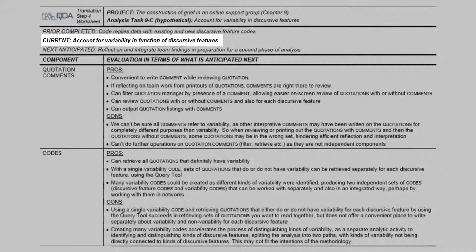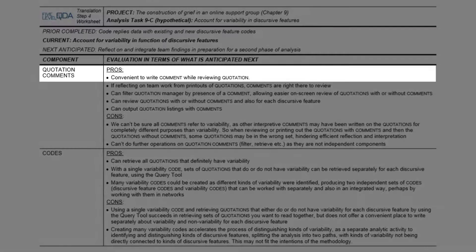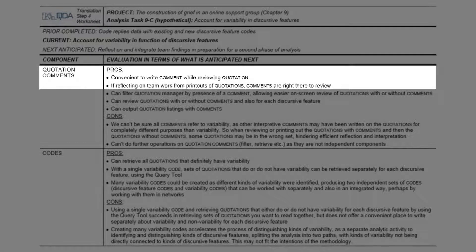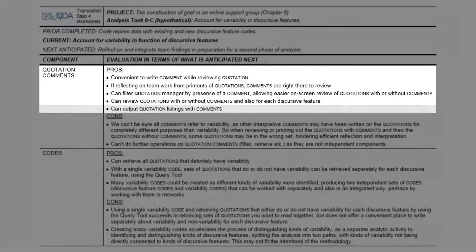One simple and convenient way to capture variability is to write a note about it in the comment area of the quotation. Then when quotations are reflected on later, either on screen or in printouts, the comments are right there to review. We can also filter the list of quotations to see only the ones with comments, which makes it more efficient, and also view just the ones that don't have comments.